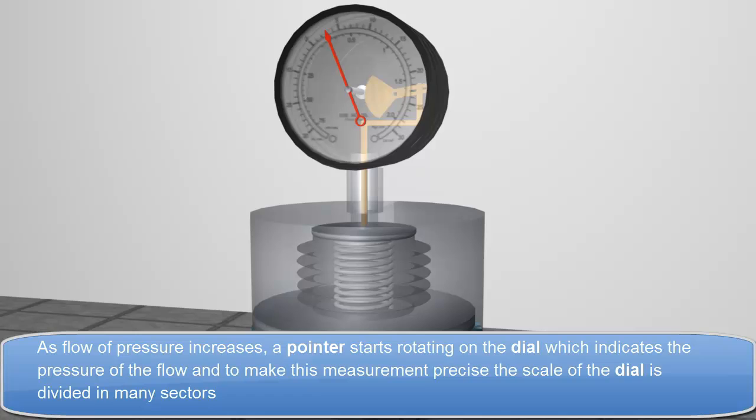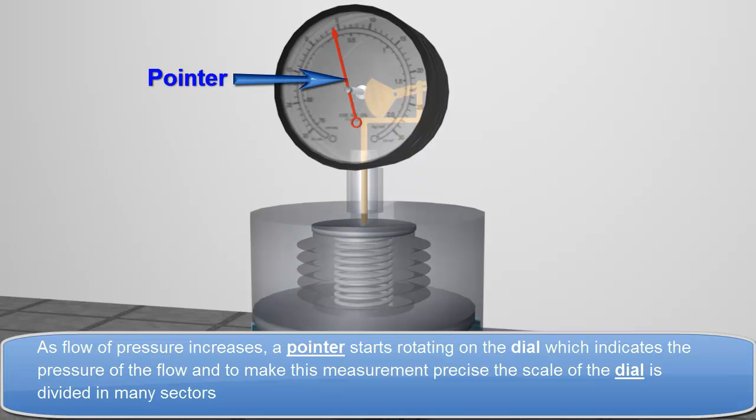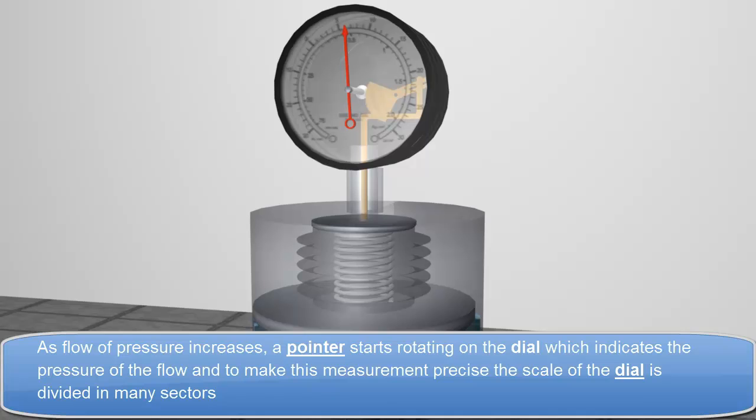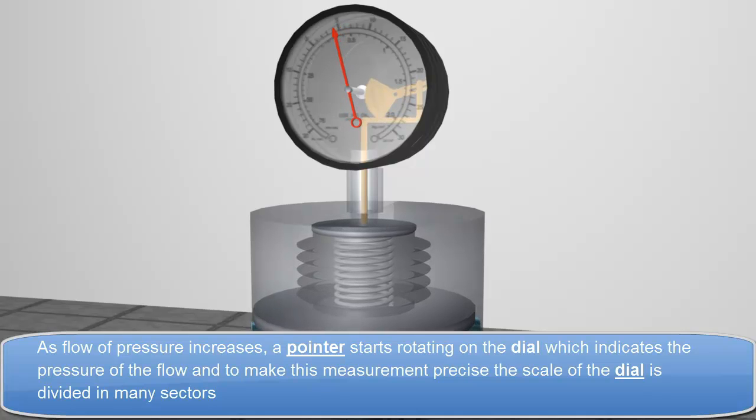As flow of pressure increases, a pointer starts rotating on the dial, which indicates the pressure of the flow.